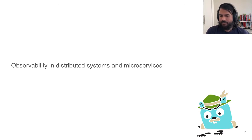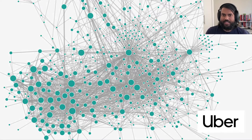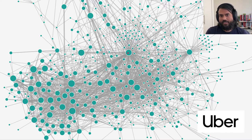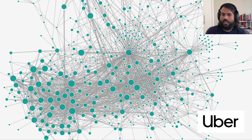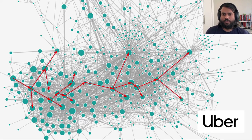This graph represents a subset of Uber's architecture. The dots or points are nodes or services, and the edges represent a call between one service and a different service. Uber's microservice architecture is pretty large — it has about 4,000 microservices and requests routinely touch several hundreds of microservices.